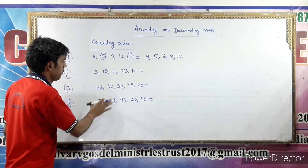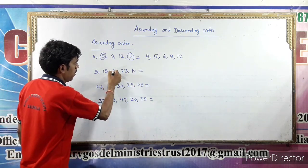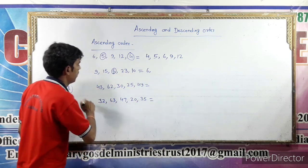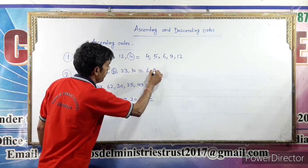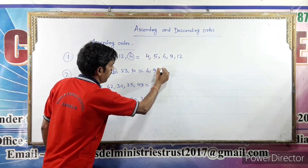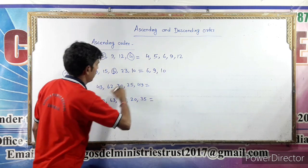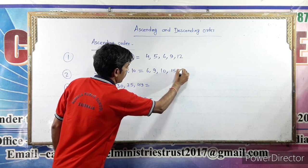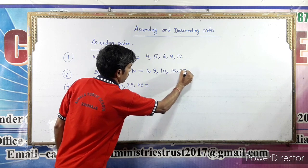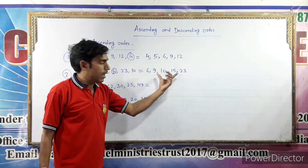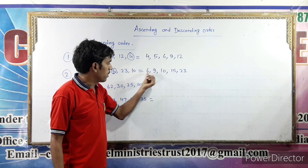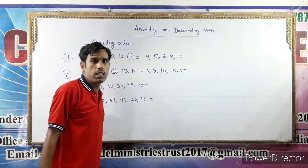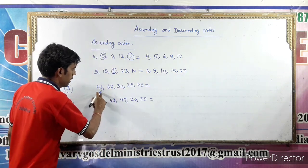Now the second example. 6 is the smallest number. Next 9, 10, 15 and 23. So in ascending order: 6, 9, 10, 15 and 23.